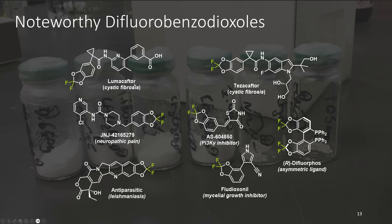The difluorobenzodioxol motif is present in a handful of drugs and has been examined in preclinical candidates during the development of new medicines. It's also been used in asymmetric catalysis, as is the case for DIFLUORPHOS shown here. This is a relevant motif that's currently challenging to make, and we wanted to see if we could do this with silver(I) fluoride as well.